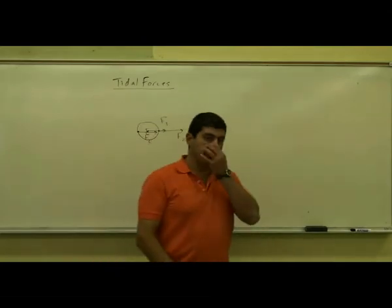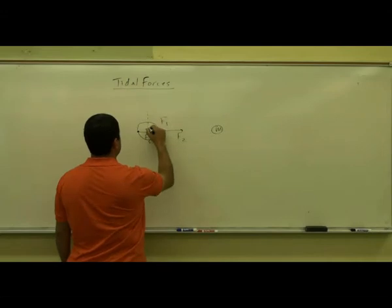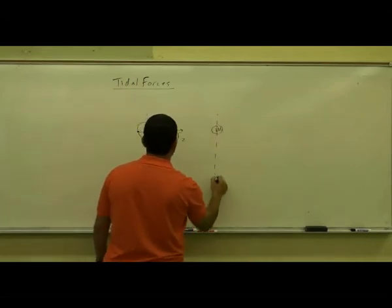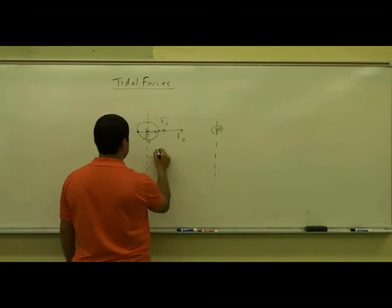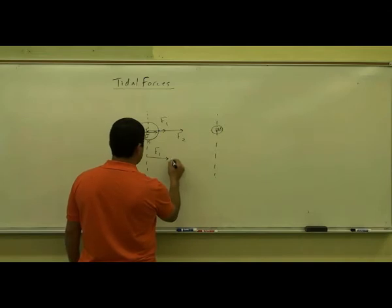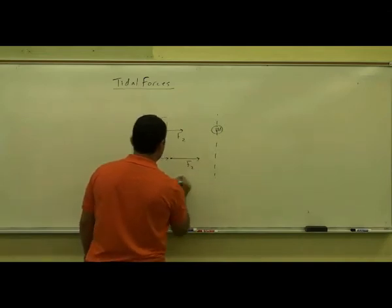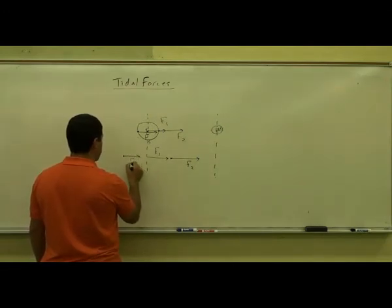So essentially you have something looking like this. Since the center of the earth is a certain distance from the moon, it gets attracted with a certain force, F1. The front side gets attracted with a bigger force, F2. The back side gets attracted with a smaller force, F3.